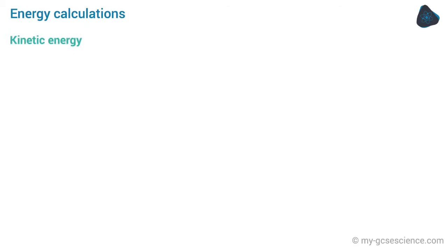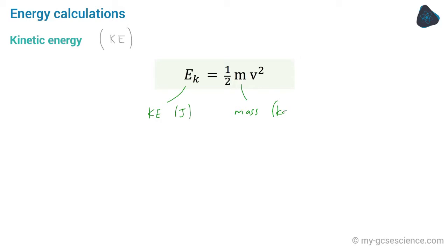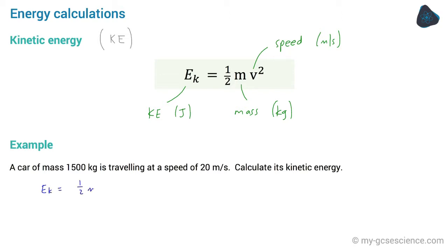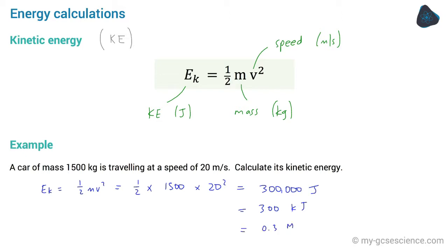For kinetic energy — sometimes called KE — the equation is Ek = ½mv², where Ek is kinetic energy in joules, M is mass in kilograms, and V is speed in meters per second. Example: Ek = ½ × 1500 × 20² = 300,000 joules, or 300 kilojoules, or 0.3 megajoules.